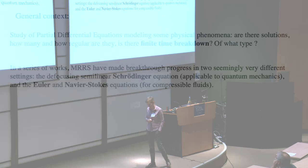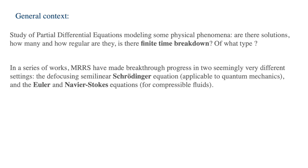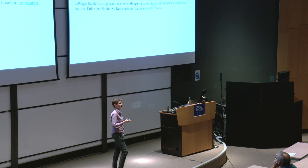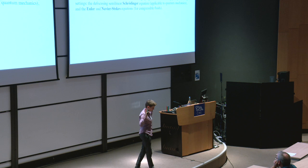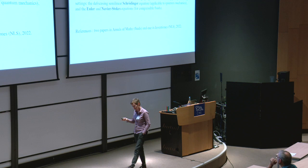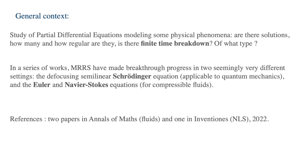What they've been doing — in three papers — is studying seemingly very different types of equations. One is the nonlinear Schrödinger equation, which comes from quantum mechanics, and the other is a set of two equations, the Euler or Navier-Stokes equations relating to fluids. Those look like very different physical problems, but they link the two to prove blow-up results in all three settings.